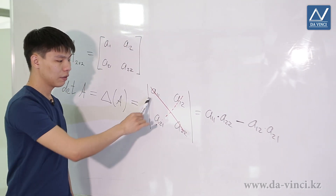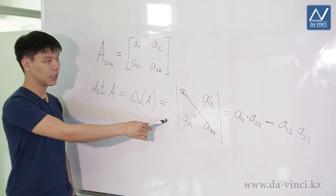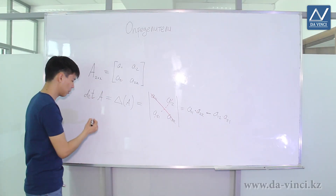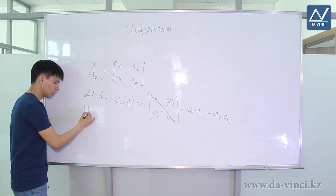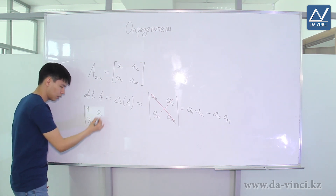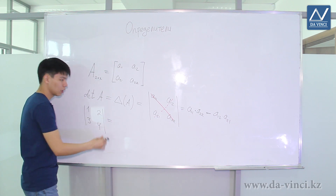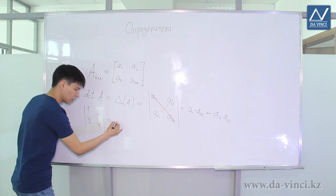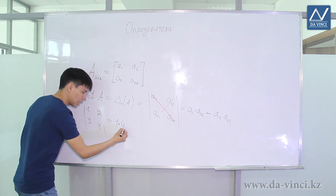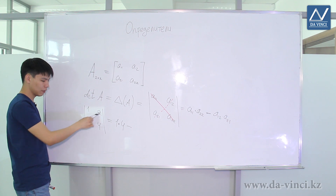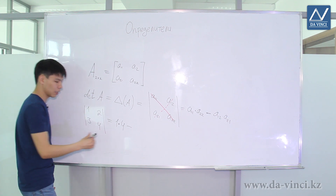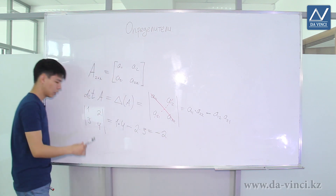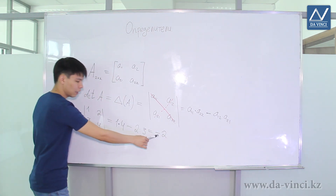This is how the second order determinant is calculated. It's called a second order determinant because there was a 2 by 2 matrix. Let's take a look at an example. We need to multiply the elements on the main diagonal, that is, 1 by 4, and subtract the product of the elements on the secondary diagonal, 2 by 3. If we calculate this, it will be equal to minus 2.